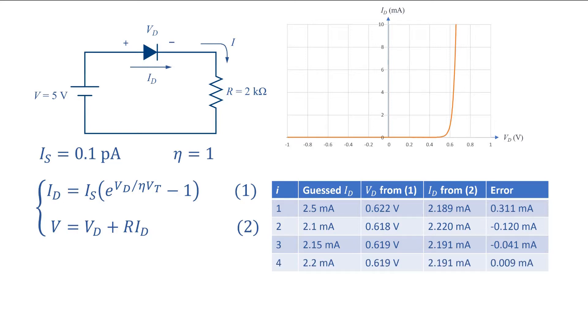For the next guess I chose 2.2 mA. As you can see the value of vd and id are unchanged within three significant digits after the decimal point. So it's done. The error is 0.009 mA, less than one percent.